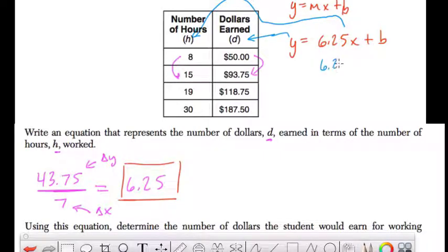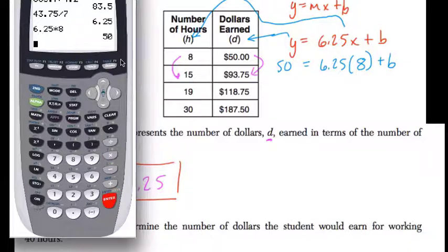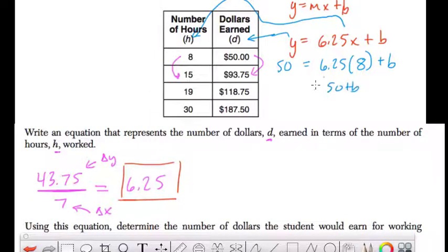So here we have 6.25 times 8, and that has to equal 50 when we add B. Alright, so 6.25 times 8 is 50. And so 50 plus B equals 50. If we solve here, we subtract 50 from both sides, we get B equals 0.